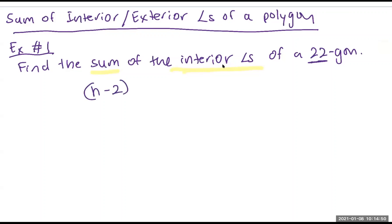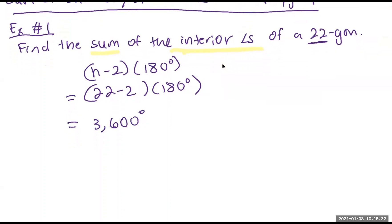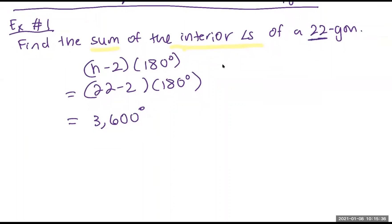Since this is asking for the sum of interior angles, I'll underline that and write out the formula. Can you guys go ahead and figure out what that sum is and type it into the chat? You're going to make sure to subtract two from 22 first, and then multiply by 180. It's 3,600 degrees. So if I'm looking at a polygon with 22 sides, I know that the interior angles add up to 3,600.